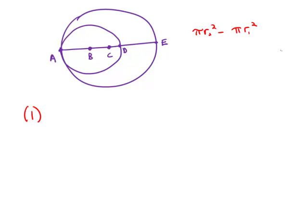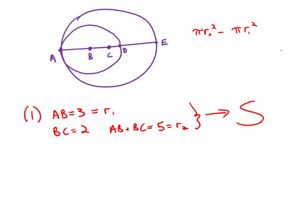Statement number one tells us that AB equals 3 and BC equals 2. Well, AB, that's the radius of the smaller circle. And AB plus BC, which is 5, that's the radius of the larger circle. So that allows us to figure out both radii, which allow us to figure out the answer, so this statement by itself is sufficient.